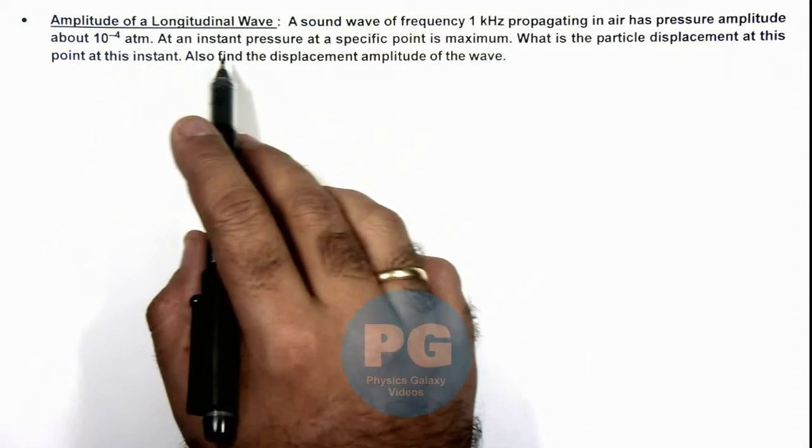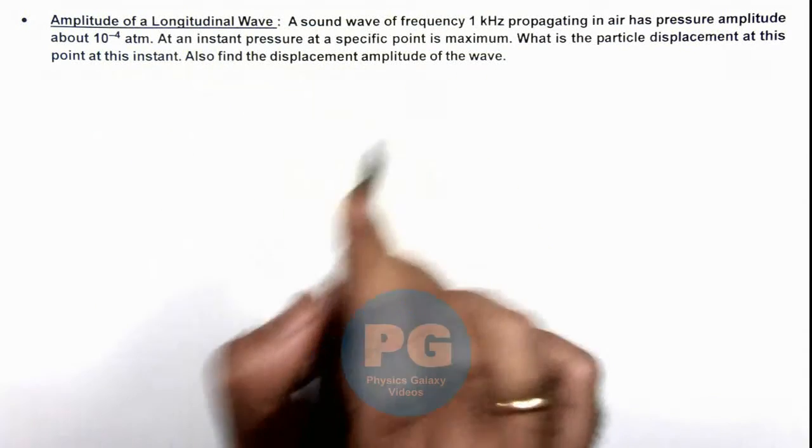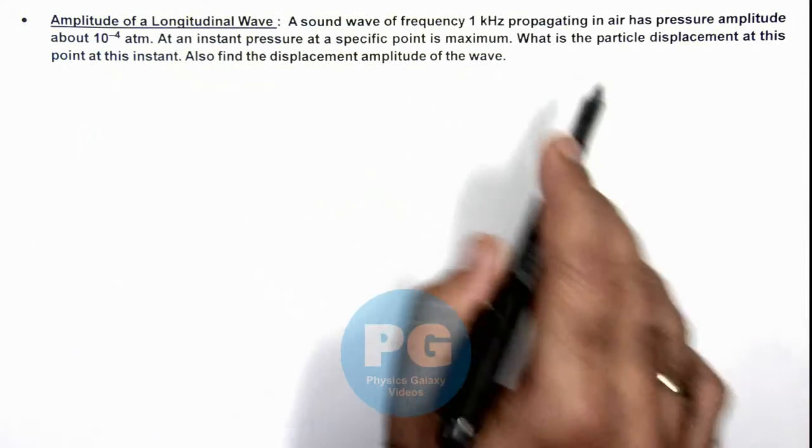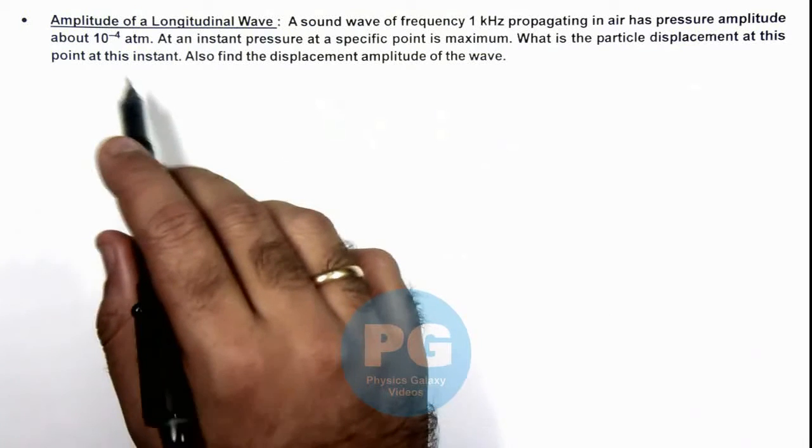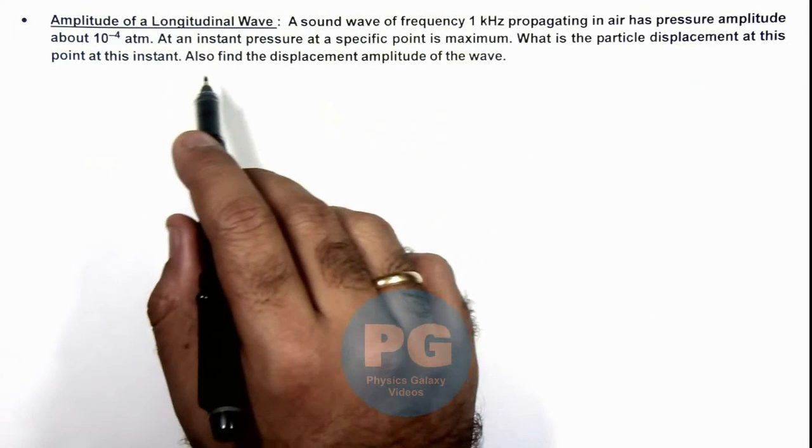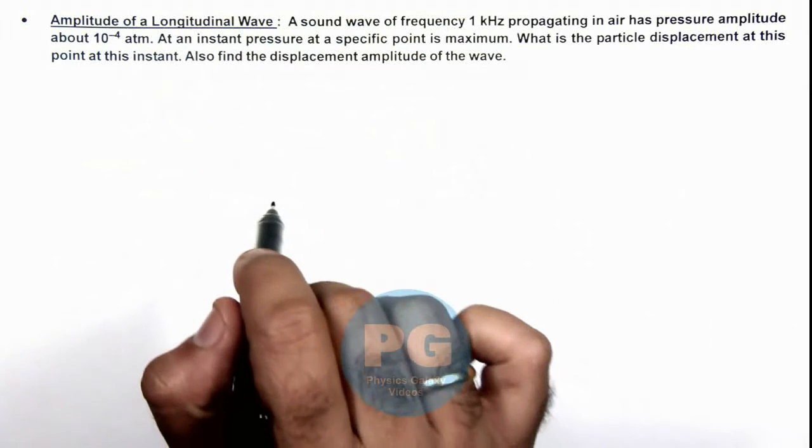And at an instant, pressure at a specific point is maximum. We are required to find the particle displacement at this point at this instant, and we are also required to find the displacement amplitude of the wave.